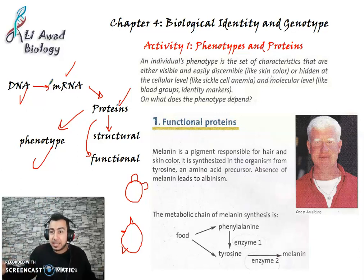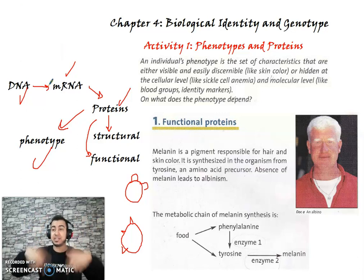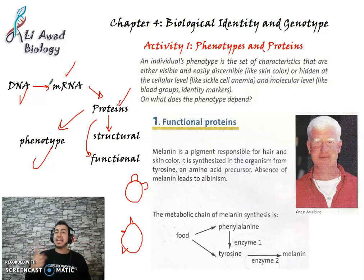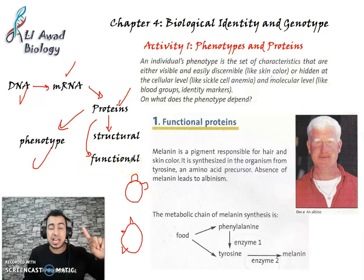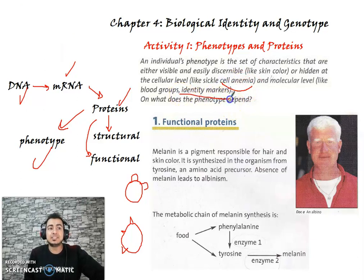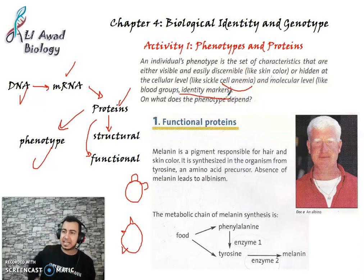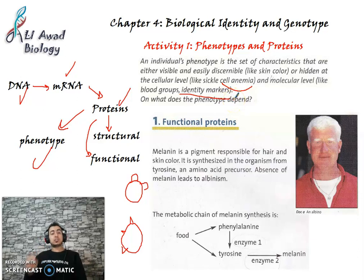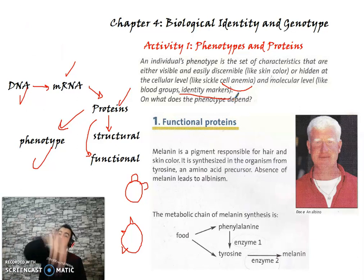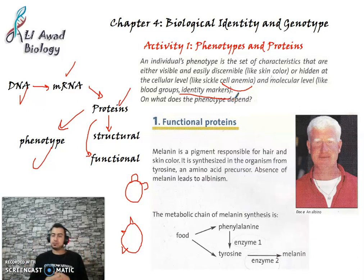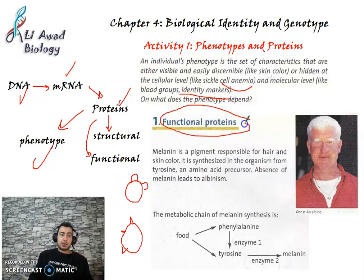So the protein is responsible for the phenotype, and the phenotype could be visible by naked eyes or hidden inside the body, like diseases such as hereditary diseases — for example, anemia, and HLA molecules that play a role in organ transplantation. Today we are going to talk about some diseases due to abnormal phenotype, caused by abnormal proteins. First, we will talk about functional proteins.